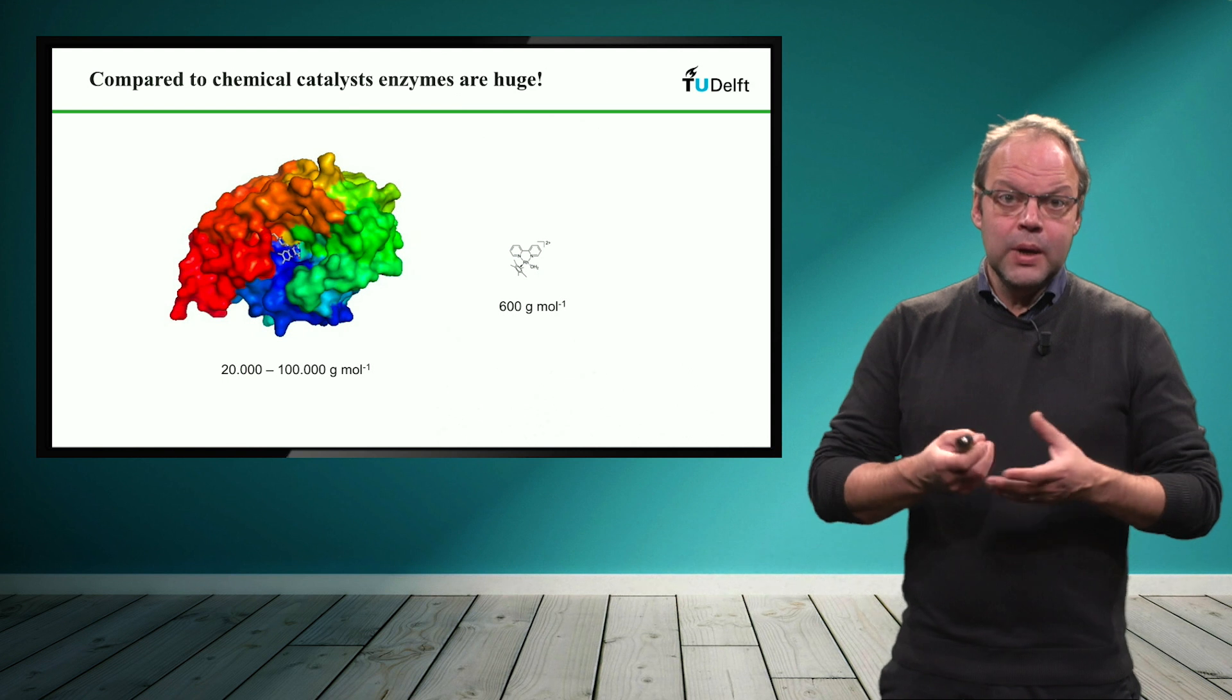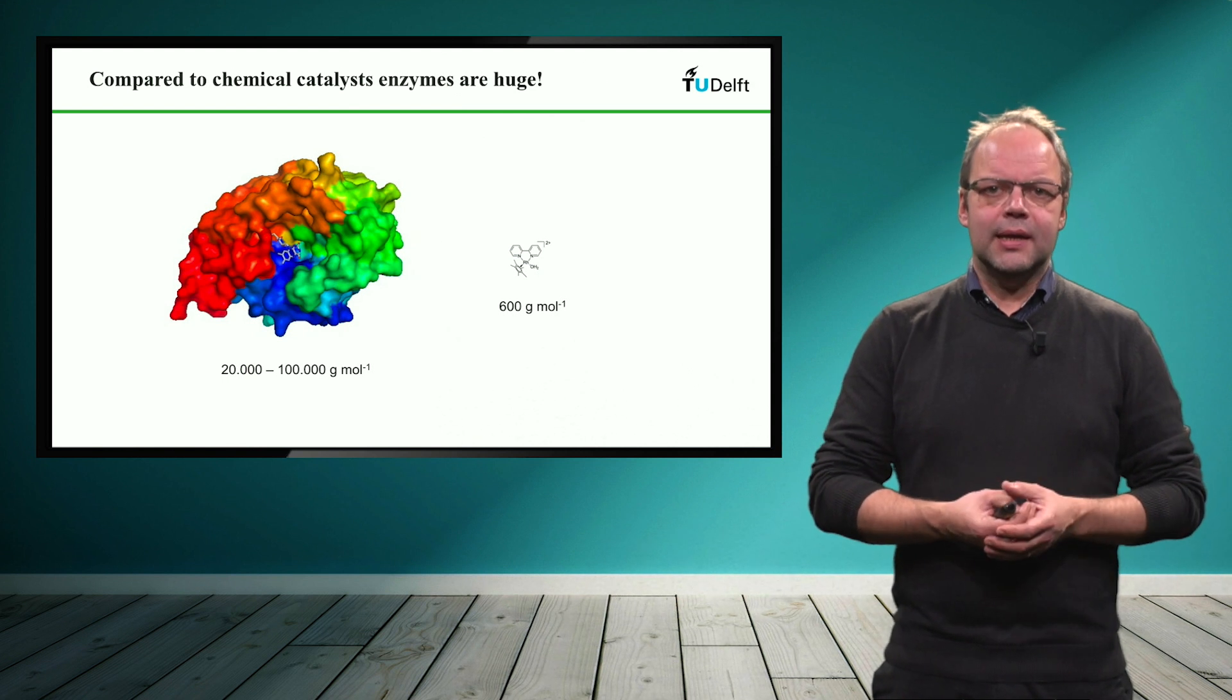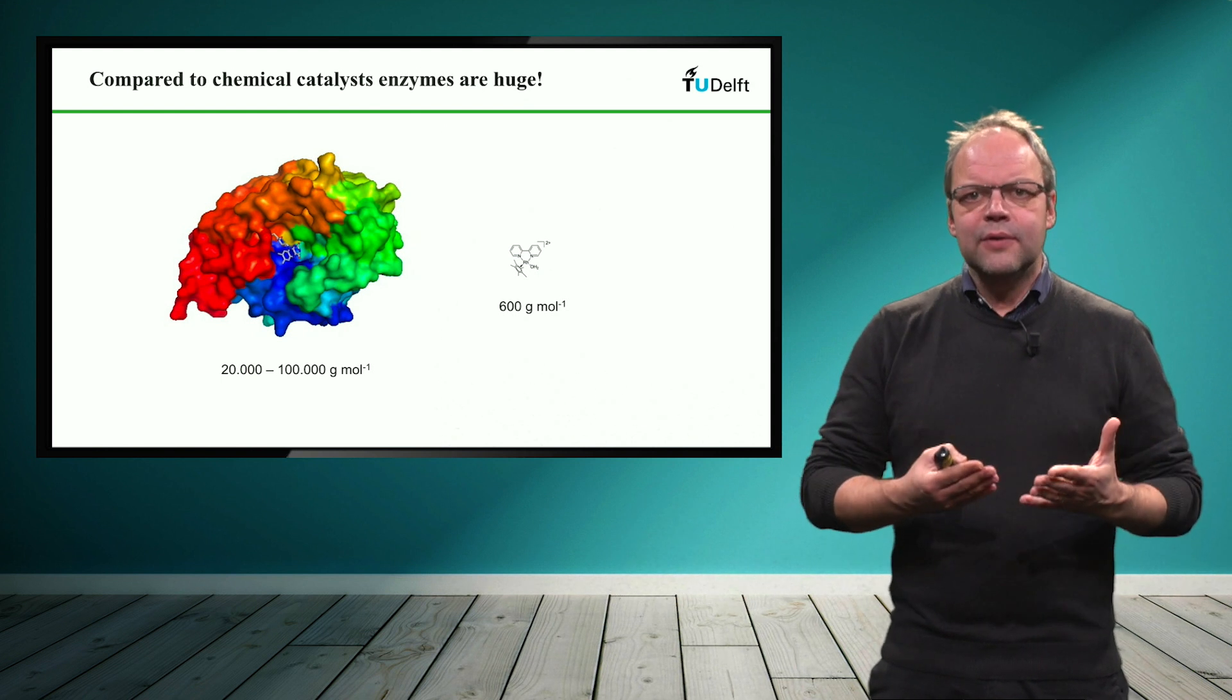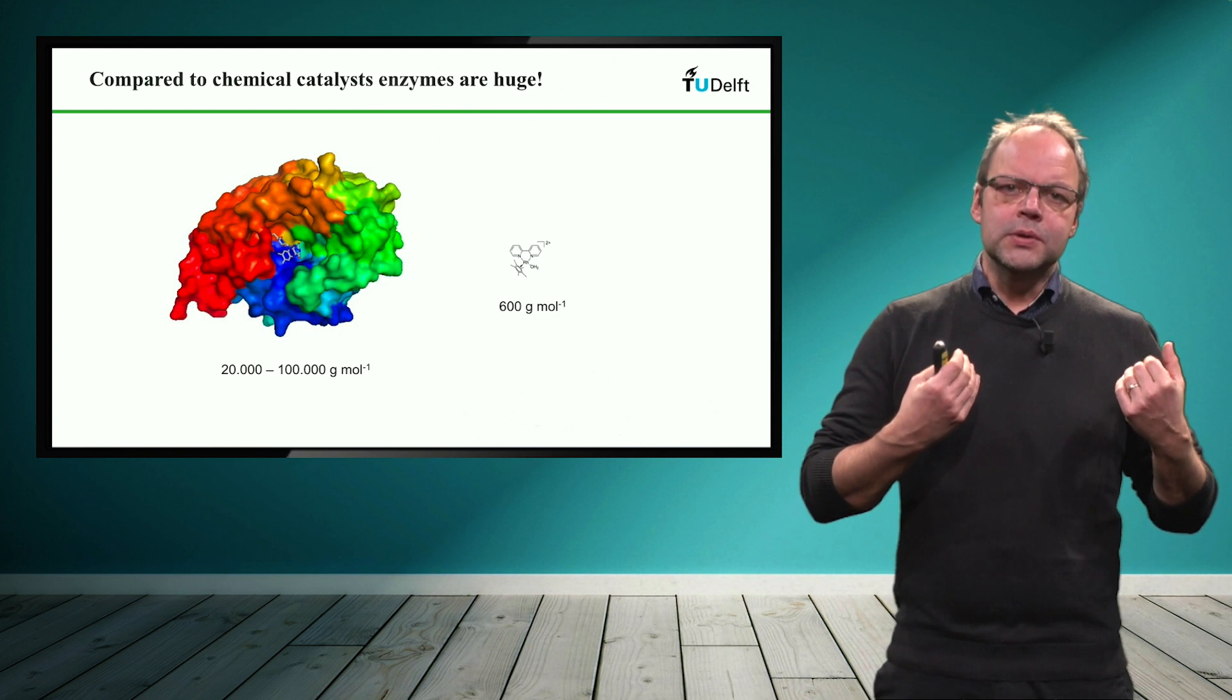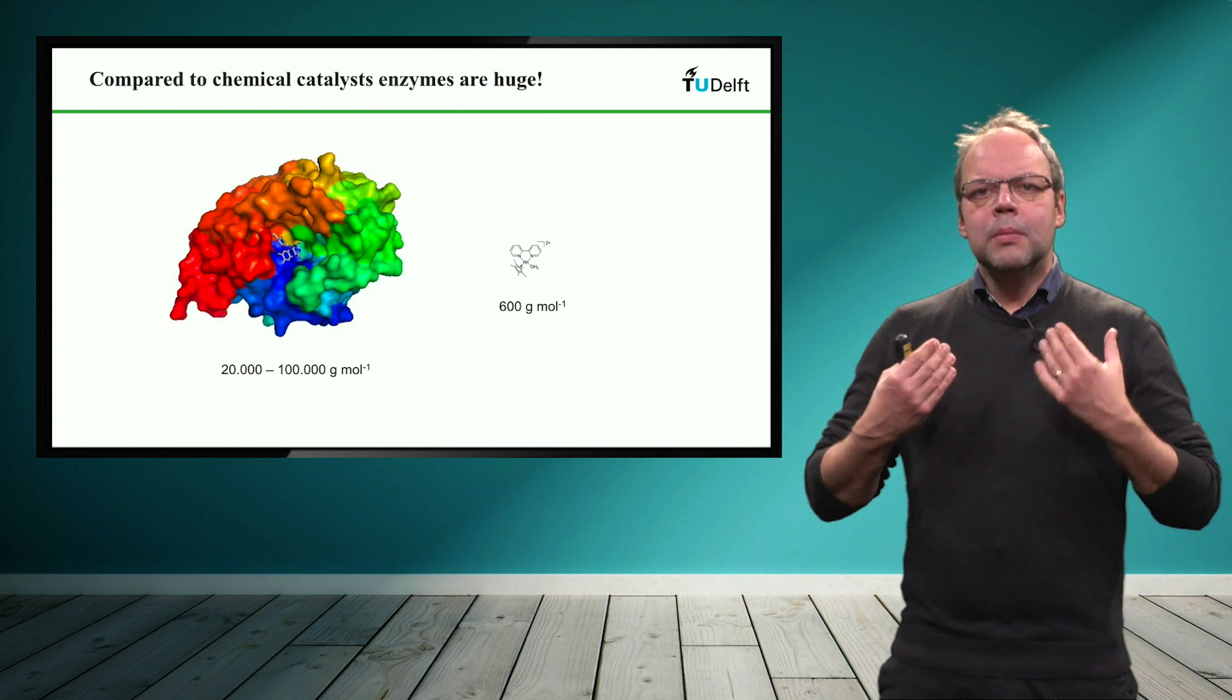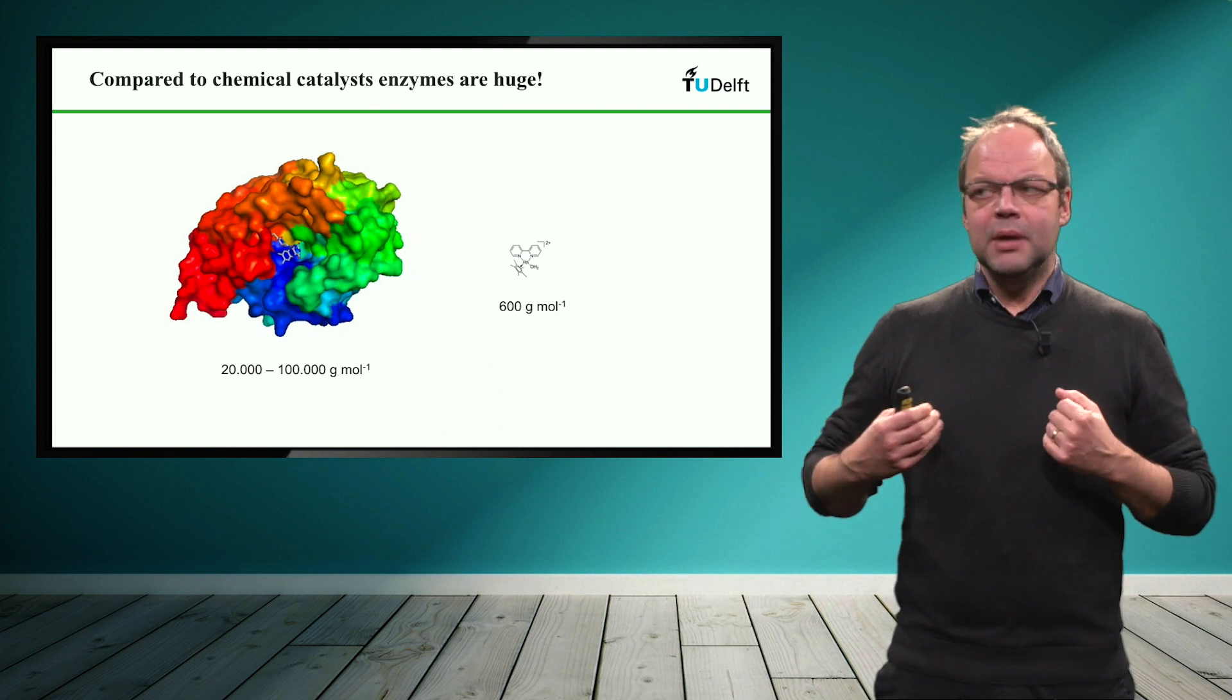In the next few slides, we're going to discuss some of the properties that make enzymes attractive catalysts in the sense that they can be used for many different applications. They can be used in washing powder, they can be used for the synthesis of pharmaceutical building blocks and many other applications. So you might ask the question, what is the difference between an enzyme and a normal chemical catalyst?